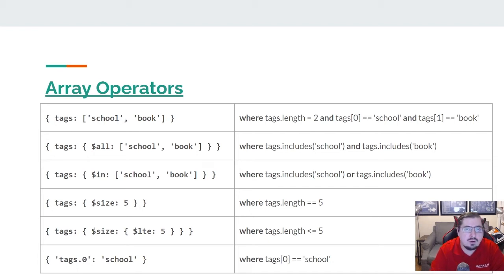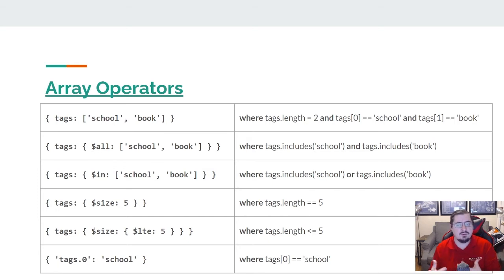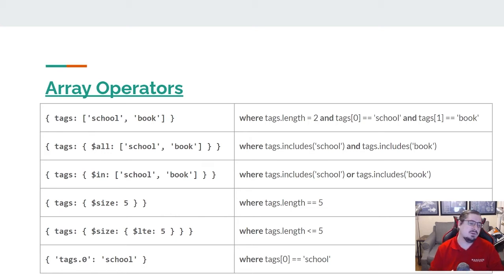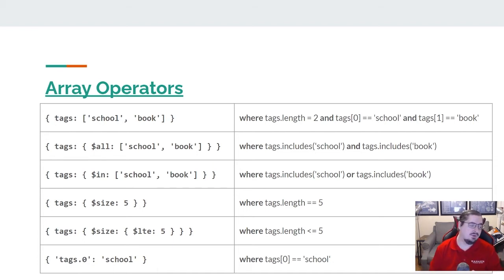Next up are the array operators. Remember with Mongo, all of our documents can have sub-documents and they can have arrays inside them — they're not limited to scalar values. So I can have a product that has a set of tags as an array. If I want to compare that tags array, the naive way most people start is to just say tags: ['school', 'books'] — but as it turns out, that checks that the tags array is exactly what you've given it. It needs to be a length of two, the first element needs to be 'school', and the second element needs to be 'book'.